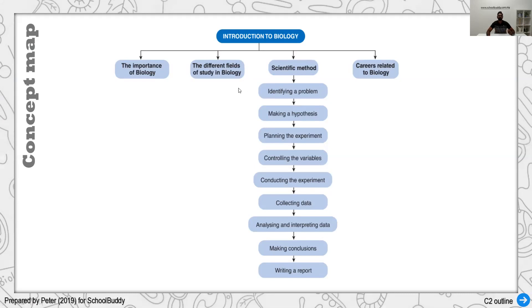Next, we're going to look at the different fields of study in biology. For example, the study of plants is called botany, the study of animals is zoology, and the study of microorganisms is microbiology. There are also other fields — we study at the biochemistry level, there's immunology which is the study of the immune system, and there are other studies as well, which you can refer to in the textbook.